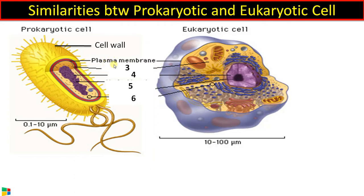Plasma membrane is present in all living cells. Inside the cell wall there is a plasma membrane in prokaryotic cells, and in animal cells the outermost boundary is also a plasma membrane.